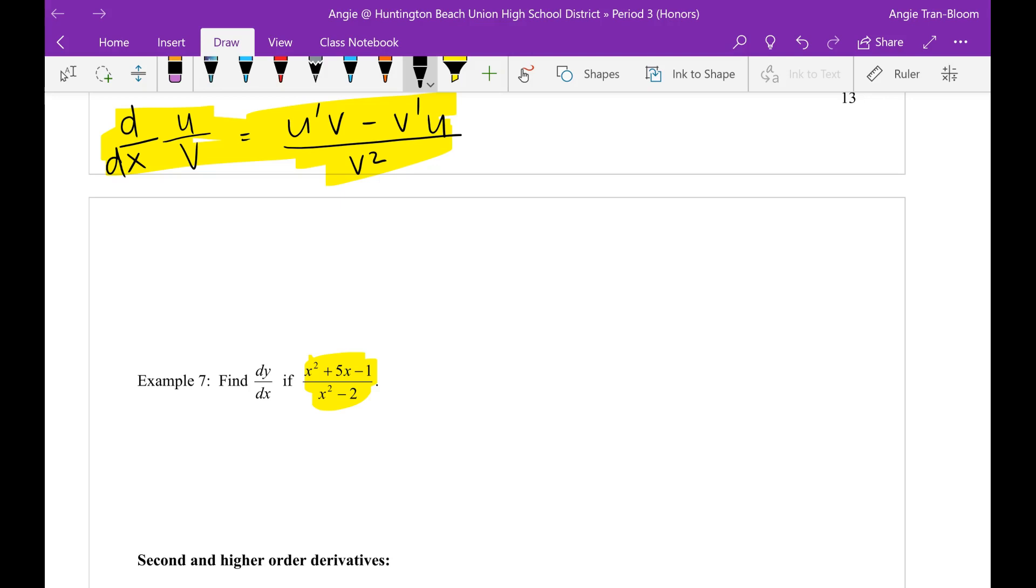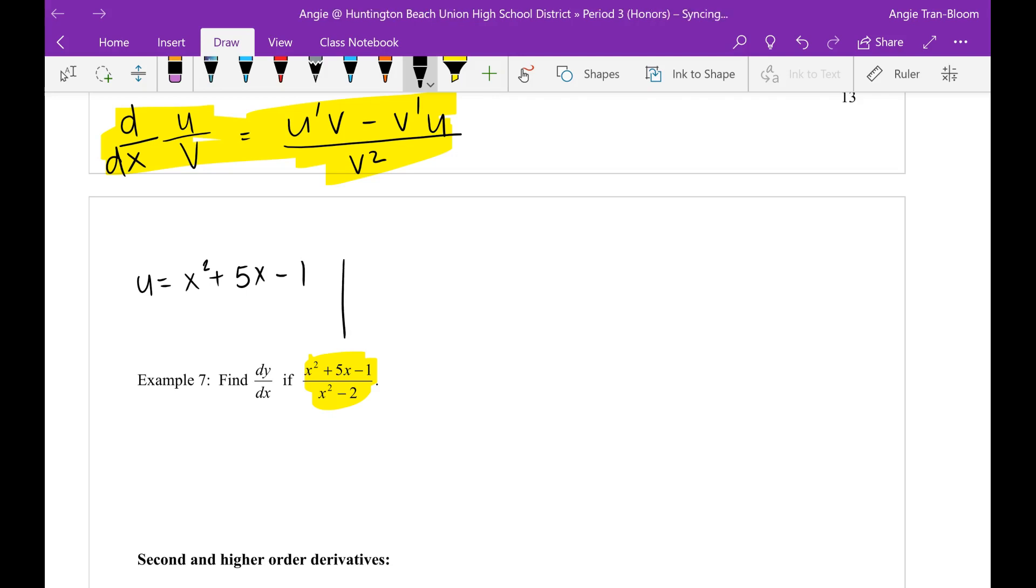So what you need to do is let u and v. Since I have space above, it looks like my formatting is a little bit off here. So let u be x squared plus 5x minus 1. Then we can do v over here. Let v be x squared minus 2.